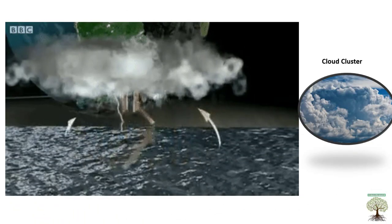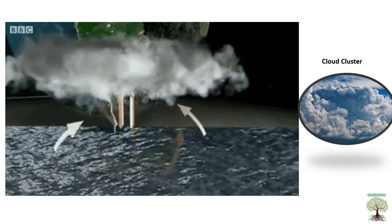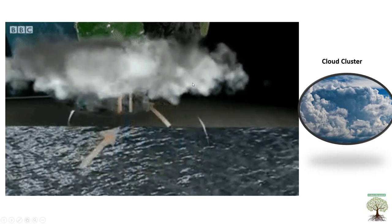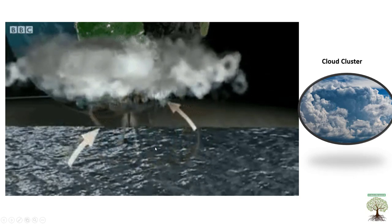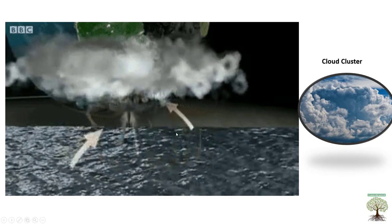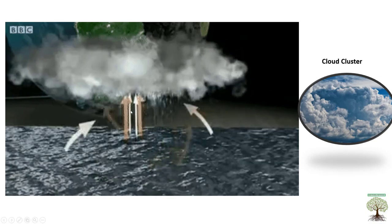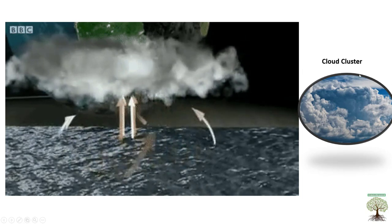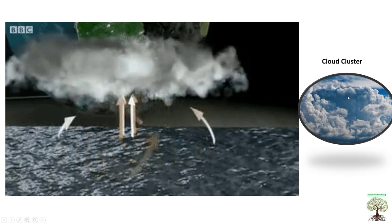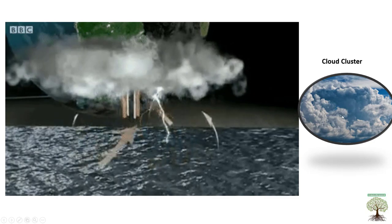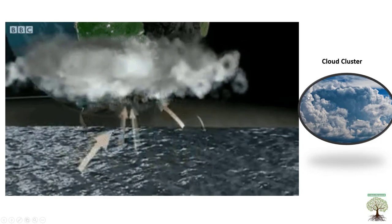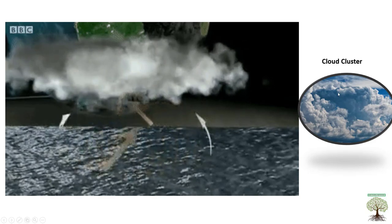When warm, moist air from tropical oceans blows from different directions and gathers at one point, it rises higher and forms clouds. Due to the rotation of the Earth, when these clouds form a cluster — with an eye and eye wall at the center — the group of clouds gathers and starts rotating, forming a cyclone.